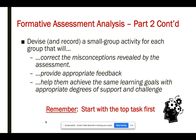Devise and record a small group activity for each group that will correct their misconceptions, provide appropriate feedback, and help them achieve the same learning goals with the appropriate degree of support and challenge. I'm going to require you to start with the top task first. There is so much magic in this piece of advice — it changed the way I thought about structuring tasks as a teacher. When you look at the group that's ready to take the next step, you design that for them, and then you get to the next group and think: how could I help them approximate doing that, but with some additional scaffolding — prompting questions, an example, or a simplified scenario?